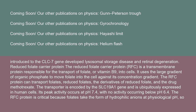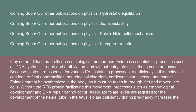The reduced folate carrier protein (RFC) is a transmembrane protein responsible for the transport of folate (vitamin B9) into cells, using the large gradient of organic phosphate to move folate against its concentration gradient. The RFC protein can transport folates, reduced folates, their derivatives, and the drug methotrexate. Encoded by the SLC19A1 gene and ubiquitously expressed in human cells, its peak activity occurs at pH 7.4 with no activity below pH 6.4. The RFC protein is critical because folates take the form of hydrophilic anions at physiological pH and do not diffuse naturally across biological membranes; folate is essential for DNA synthesis, repair, and methylation.